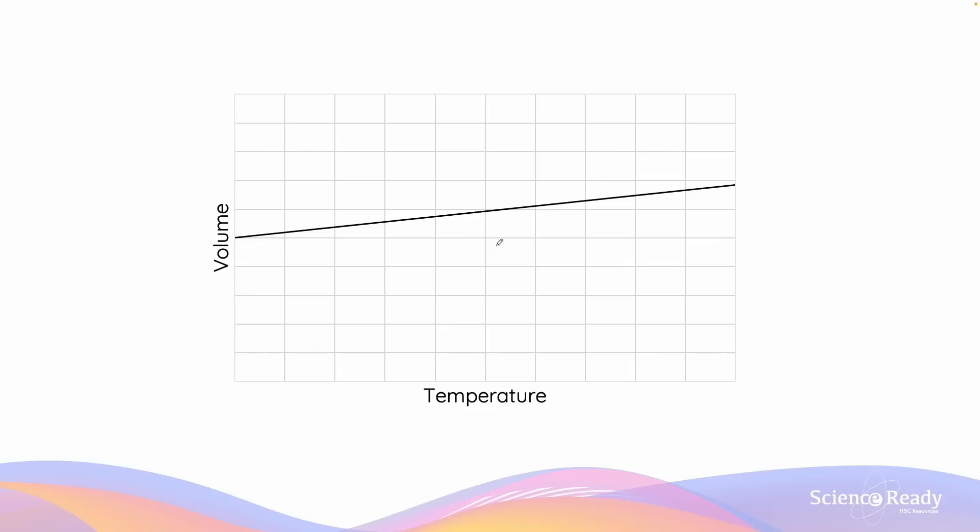Here we have a graph which demonstrates the direct proportionality between temperature and volume, given that amount and pressure are kept equal in a gaseous system. Note that at the temperature of 0, the volume of gas is a non-zero value.